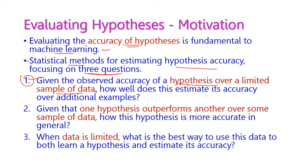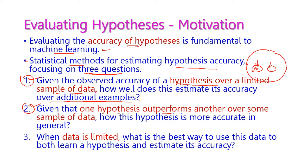The sample data size is very limited — for example, below 30. If the sample size is very limited compared to the entire population and we are testing on this particular hypothesis, what about the test on other samples of data? This is the first question. The second question is: given that one hypothesis outperforms another over some sample data, how is this hypothesis more accurate in general?